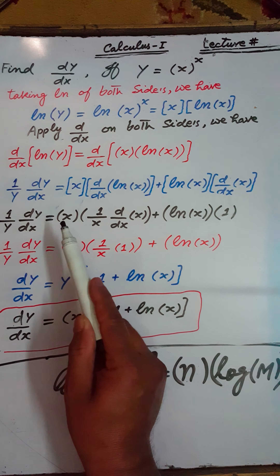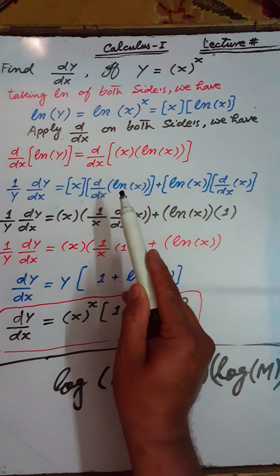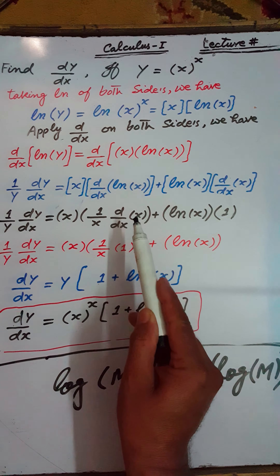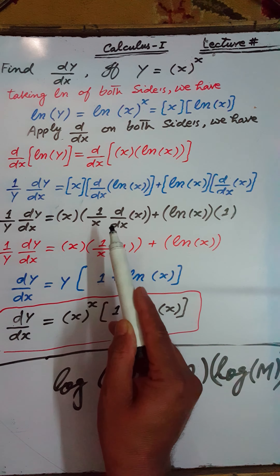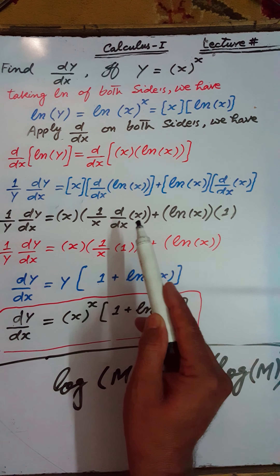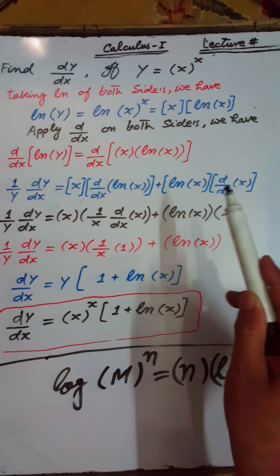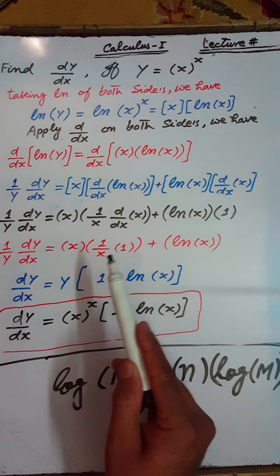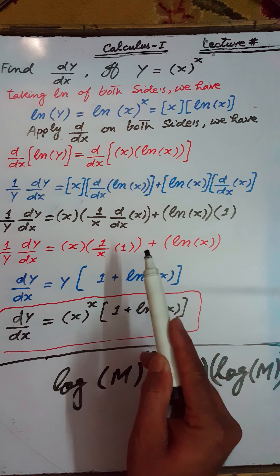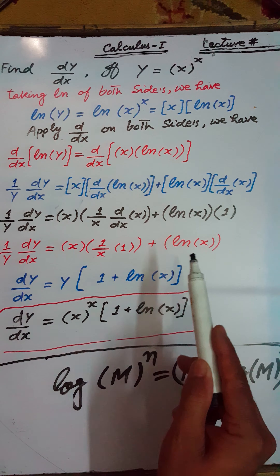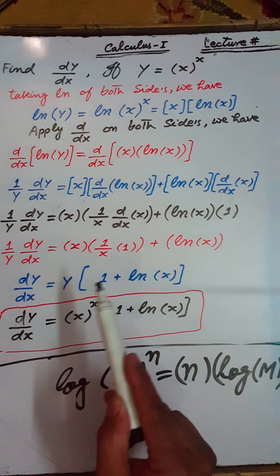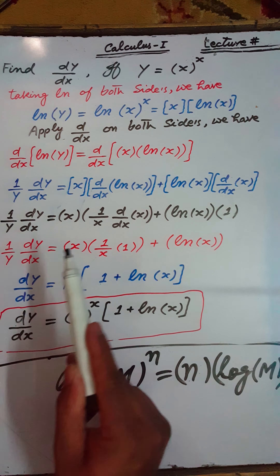Applying the product rule: (1/y)·(dy/dx) = x·(d/dx of log x) + log(x)·(d/dx of x). The derivative of log(x) is 1/x, and the derivative of x with respect to x is 1. So (1/y)·(dy/dx) = x·(1/x) + log(x)·1 = 1 + log(x). Multiplying both sides by y gives dy/dx = y·(1 + log x).